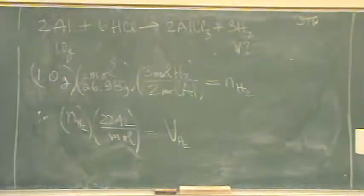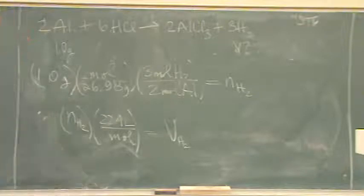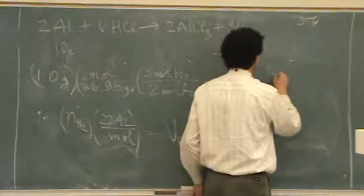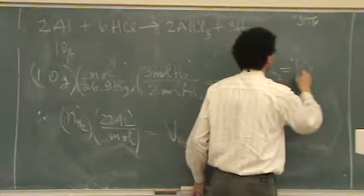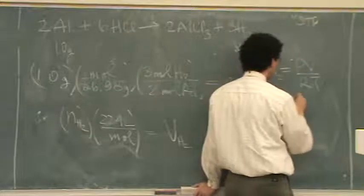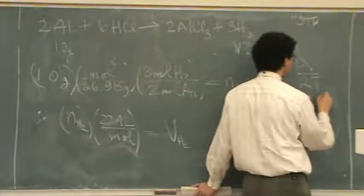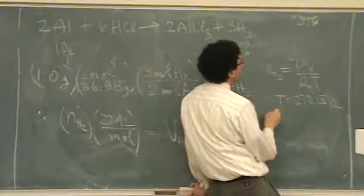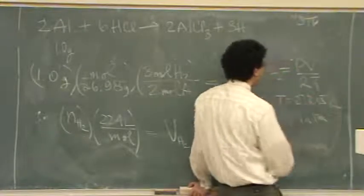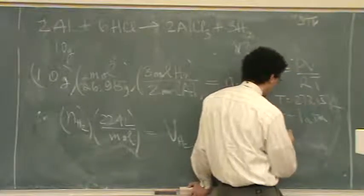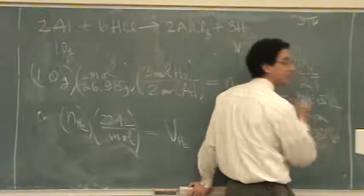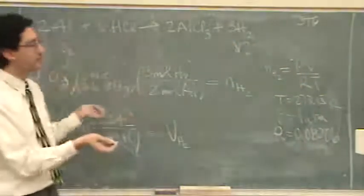There you go. The alternative method is to say moles of H2 equals PV over RT. STP, T is 273.15 Kelvin. P would be 1 atmosphere, and R would be 0.08206 liters atmosphere per mole. So you've got all your variables there, too.